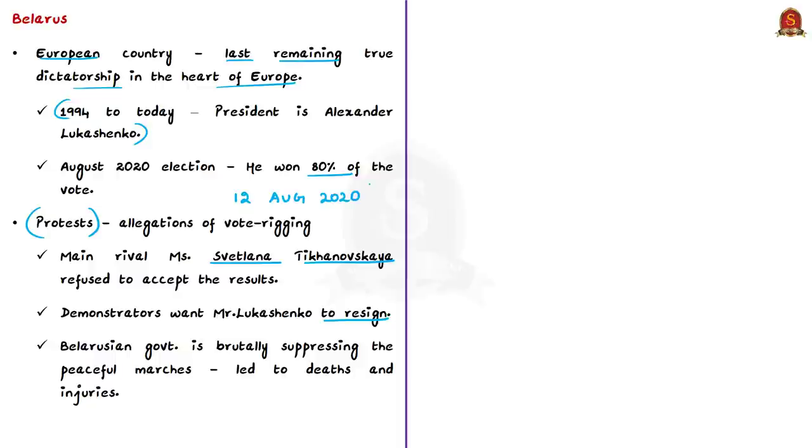The issue is the Belarusian government is brutally suppressing the peaceful marches. This suppression has led to deaths and injuries to the demonstrators. More than 600 people have been arrested in the recent unrest, and many opposition leaders were subjected to abduction, forced to flee the country, and some even forcibly deported. One among them was Ms. Tikhanovskaya. This is the ongoing situation of Belarus.